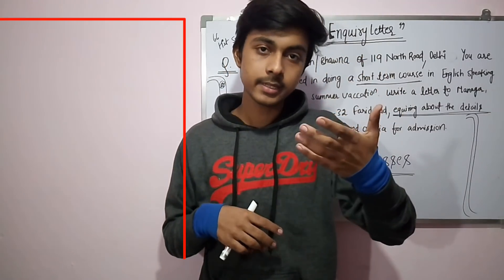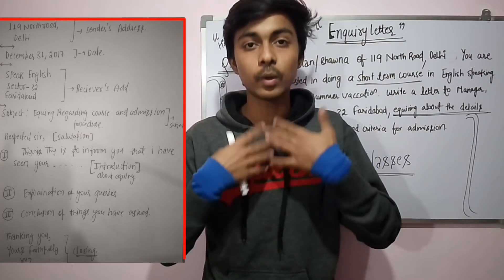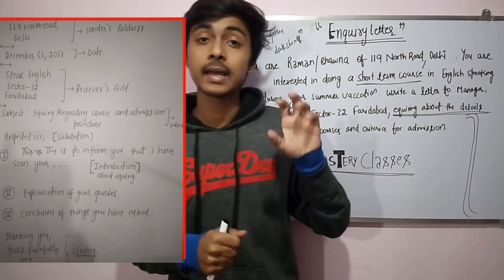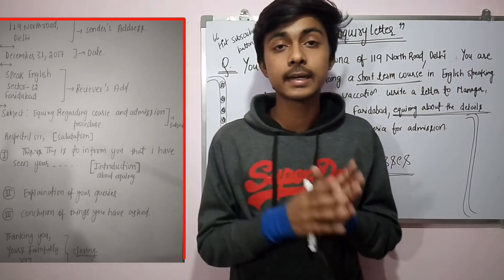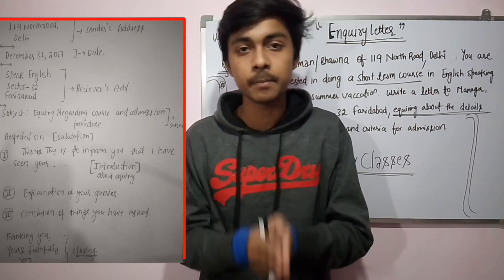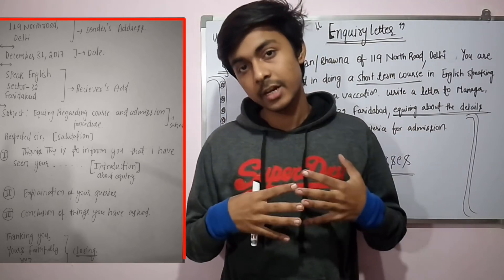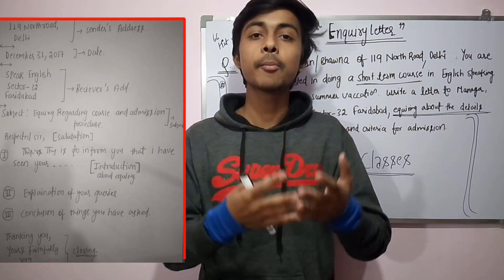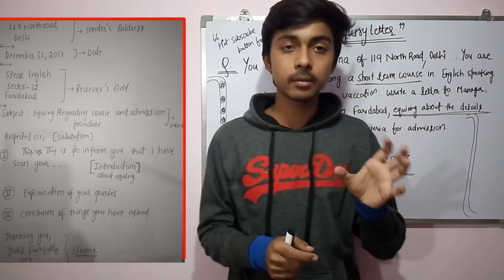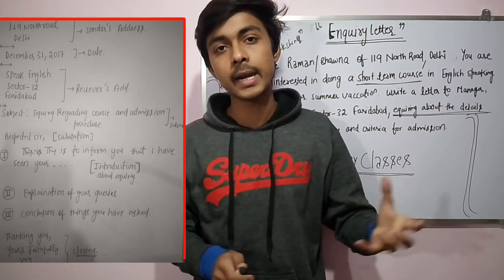First of all, there is the sender's address — where we live, where we are writing the letter from. Then there is a gap, then the date, written in full form, like 24 December 2017. Then one line of gap, then the receiver's address — the address we are sending it to. Then one line of gap, then the subject line.